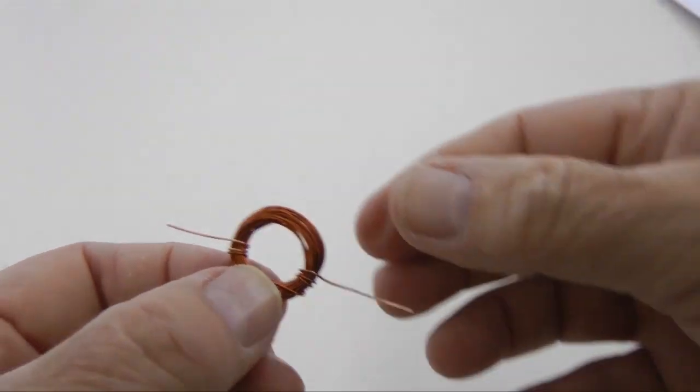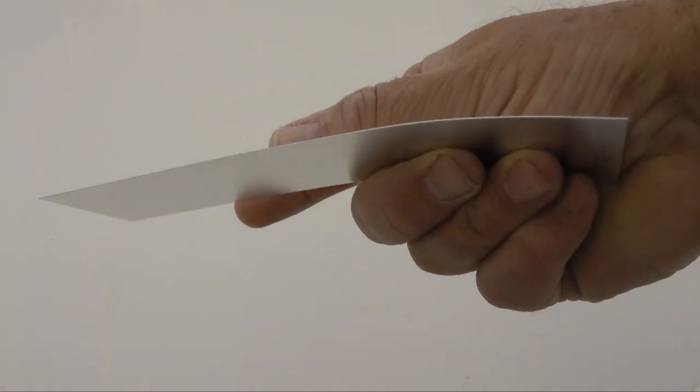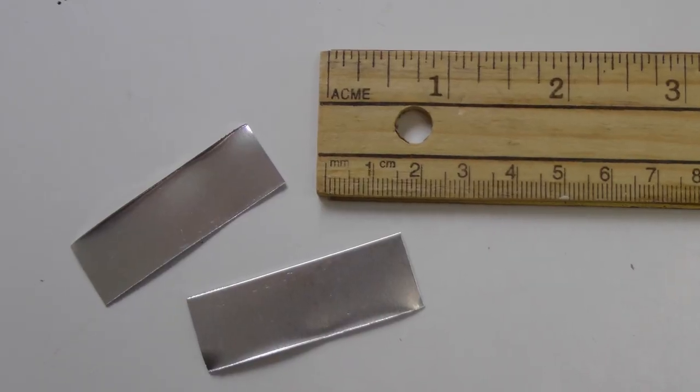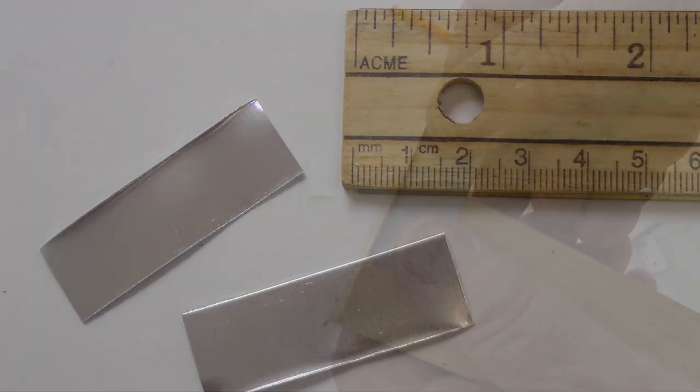This completes the coil. Next, we need some metal brackets. Any thin metal is suitable. Aluminum baking sheets work well. Cut two brackets 1.5 centimeters by 5 centimeters by 5 centimeters. Fold them in the center.